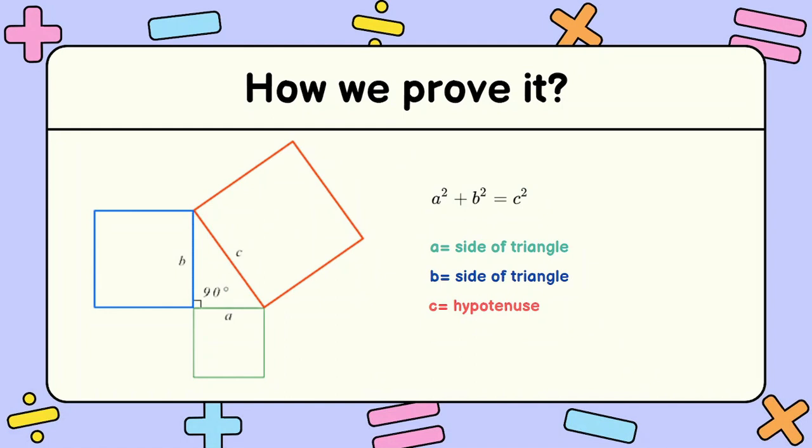So next is how can we prove it. So let's say you want to find the hypotenuse. As you can see in the following figure, you can see the a square and the b square. Well, a, as mentioned earlier, is a side of a triangle, and b is the side of a triangle, and c is the hypotenuse.